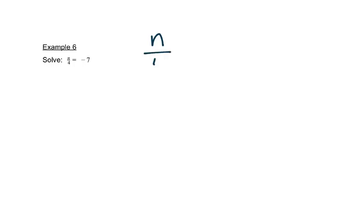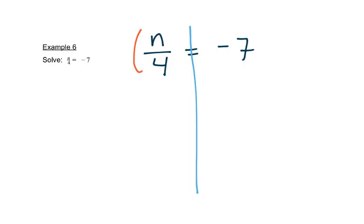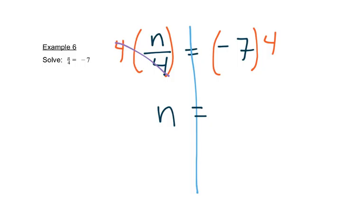Let's do one more problem. In this problem we have n divided by 4 is equal to negative 7. We'll draw our line down through the center to break up the two sides. The letter is on the left, and it's division — we have n divided by 4. The opposite operation from division is multiplication. So we want to multiply that side by 4, and if we do that on one side we have to do it on the other side. That cancels out and leaves us with just n on the left. And negative 7 times 4 is negative 28. That's our answer.